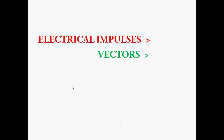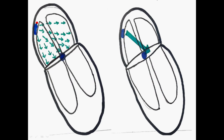Now let's see how these electrical impulses or events are converted into vectors, and how these vectors are converted into ECG patterns. Depolarization starts at the SA node — that is, the gaining of positivity into the cells starts at the SA node, as it is the pacemaker and has the ability to initiate impulses. From here, depolarization spreads to the two atria cell by cell, downwards and outwards. If we add all these small vectors, we get a single vector directed downwards and leftwards.